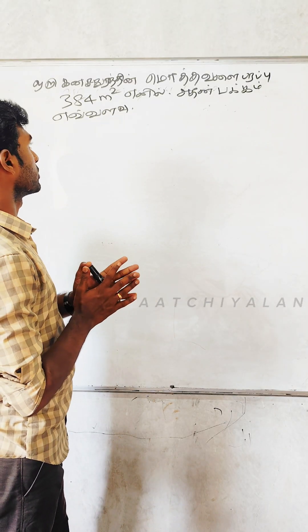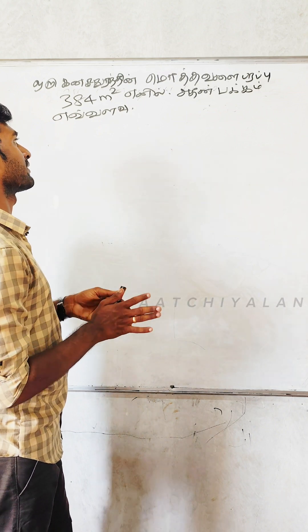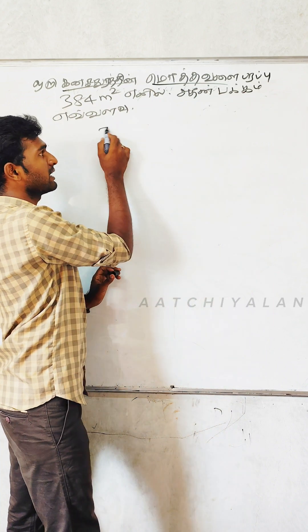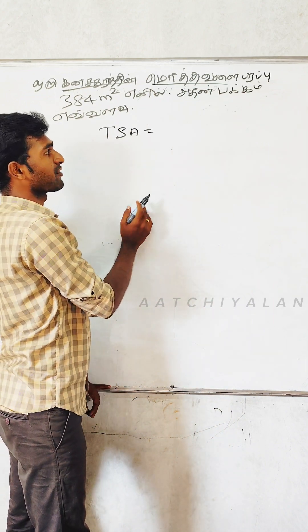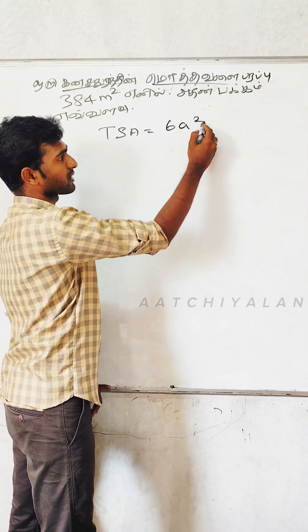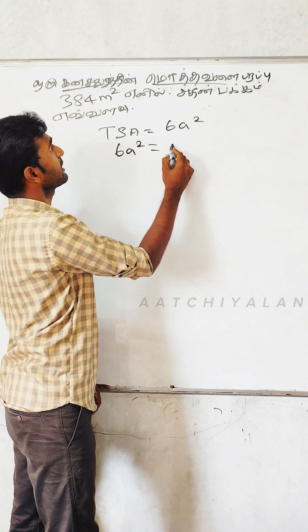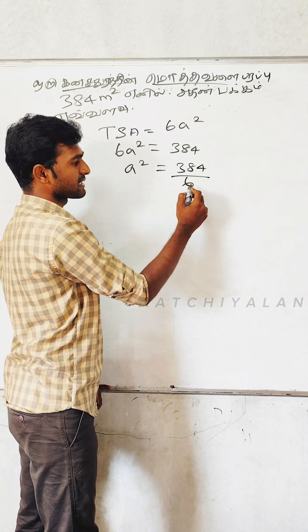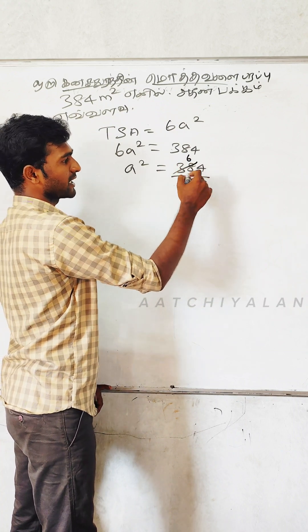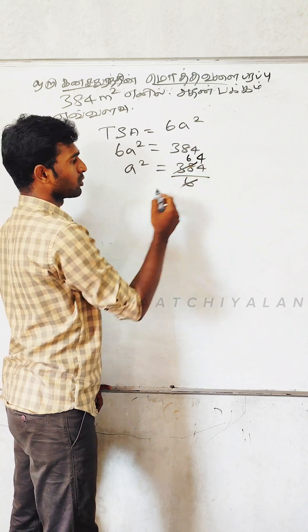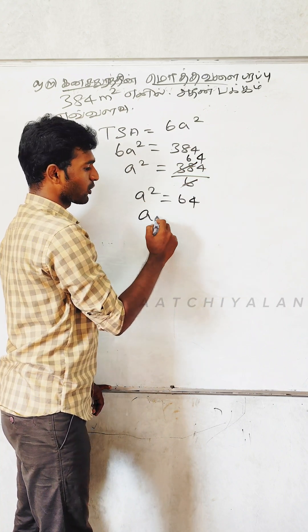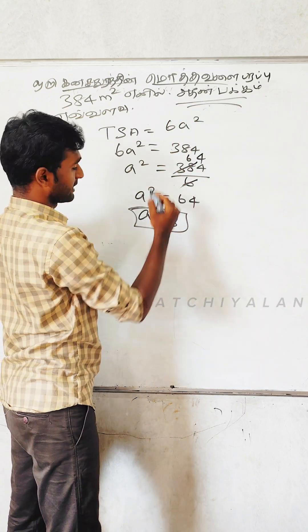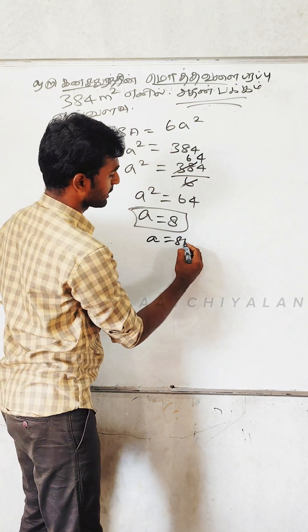The first trend is 384 m². That's a cube. The first trend is total surface area. Total surface area is 6a². So 6a² is 384. a² is 384 by 6. If you cancel, a² is 64. Then a square is 64. A value is 8. So a is equal to 8 meters.